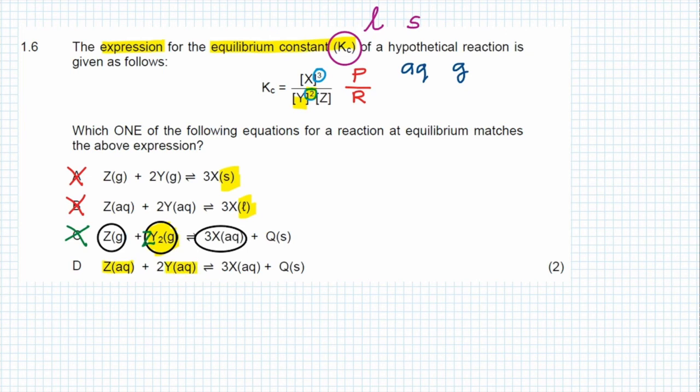If we look at D, Z is aqueous, Y is aqueous, X is aqueous, and the extra product that forms is a solid, so it is naturally excluded from the Kc expression. When we look carefully, we see that the ratio - the number in front of Y is 2 and the number in front of X is 3 - as described by the Kc expression. This means that D is the correct answer for two marks.